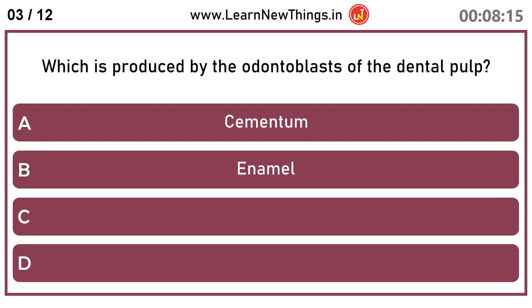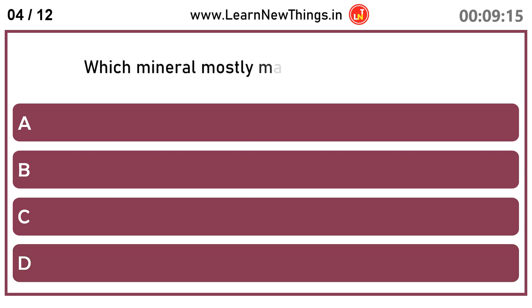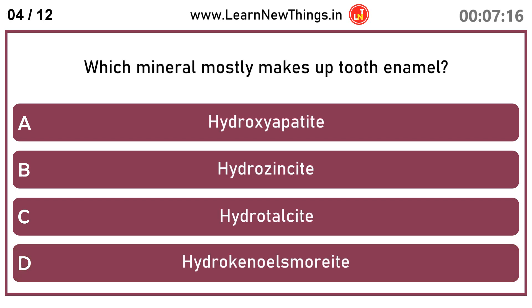Which is produced by the odontoblast of the dental pulp? Dentin. Which mineral mostly makes up tooth enamel? Hydroxyapatite.